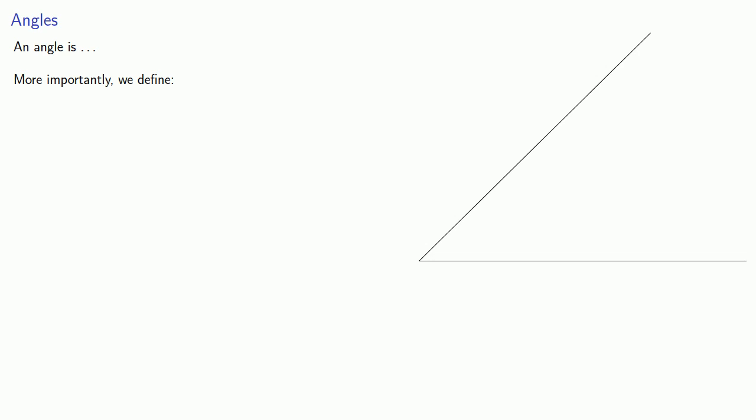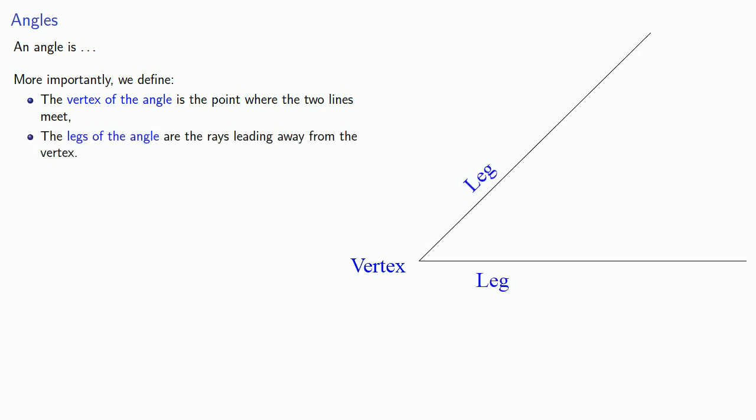More importantly, let's talk about the parts of an angle. The vertex of the angle is the point where these two lines meet, and the legs of the angle are the rays leading away from the vertex.